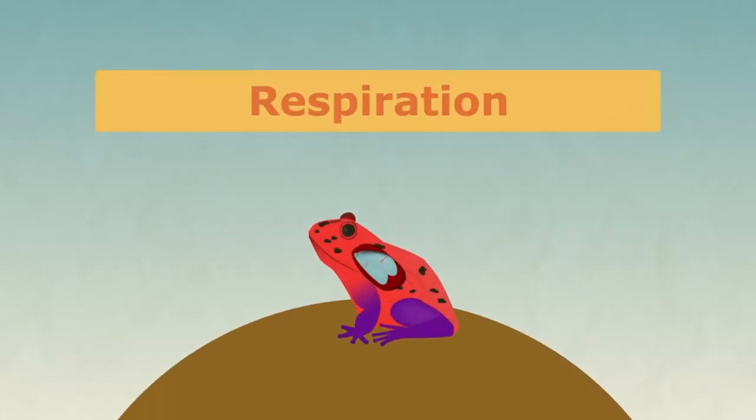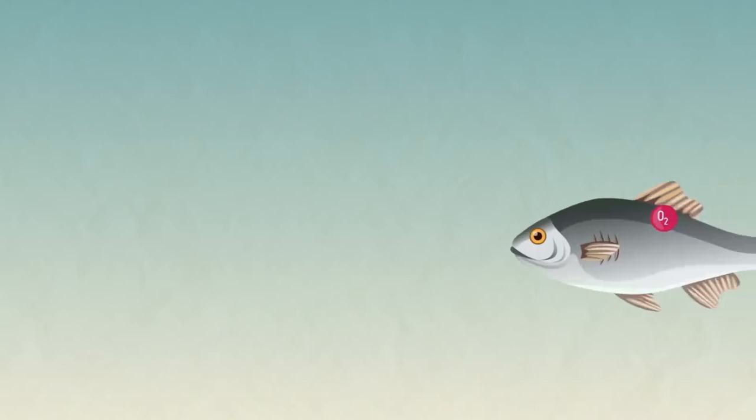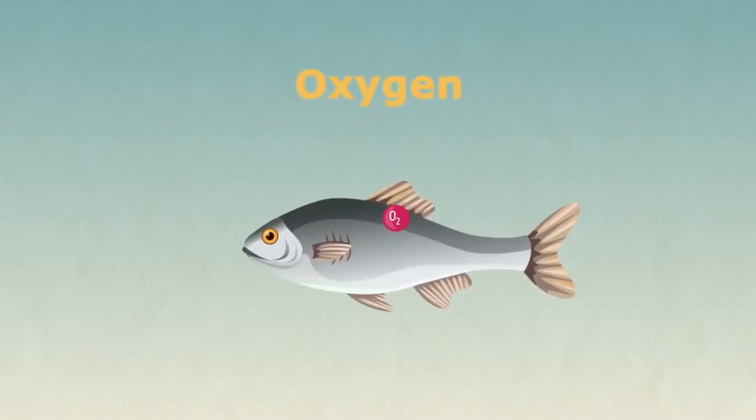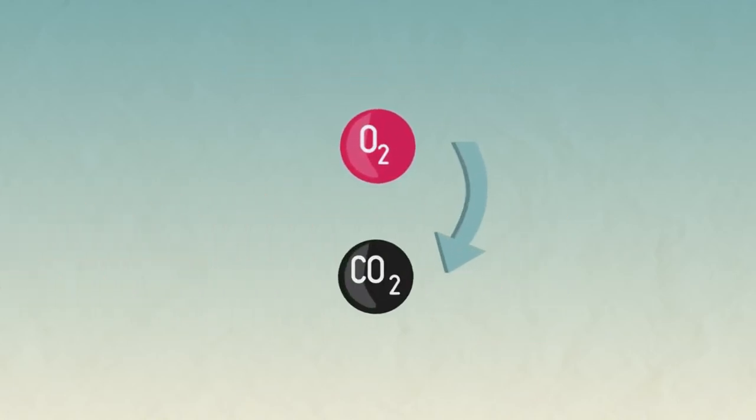Respiration is carried out by all living things. Animals need oxygen to carry out aerobic respiration and they need to get rid of the waste product called carbon dioxide. This is called gas exchange, swapping one gas for another.